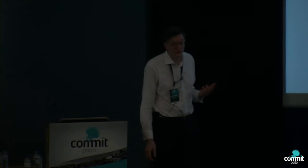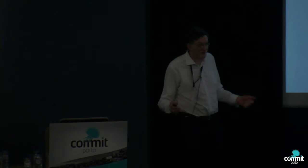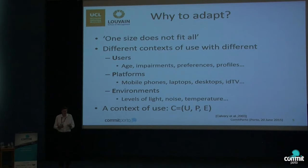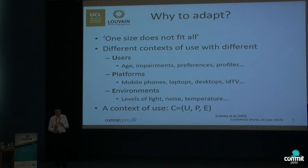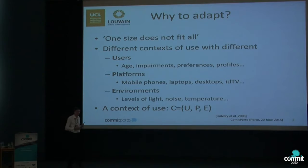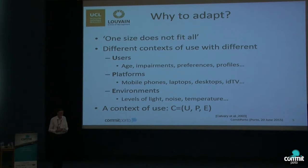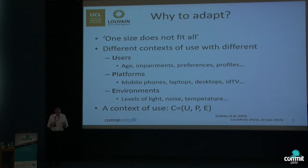One single user interface does not fit all. We have different languages, platforms, modalities, and preferences, but we should still be able to do manageable things. I call this a context of use, which consists of three things: the user — who I am, with my preferences; the platform — what kind of device do we use; and the environment — in what kind of environment are we. For instance, since I'm tall, I cannot adapt myself to any car. Today cars are adapted to me and not the inverse.